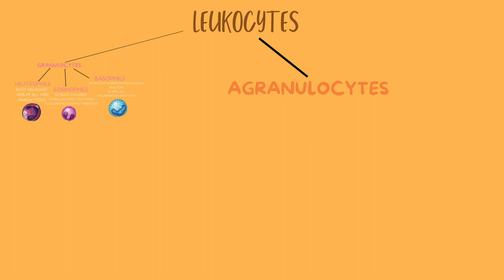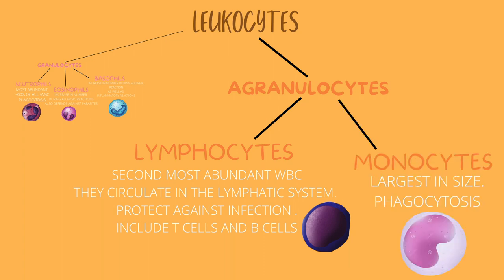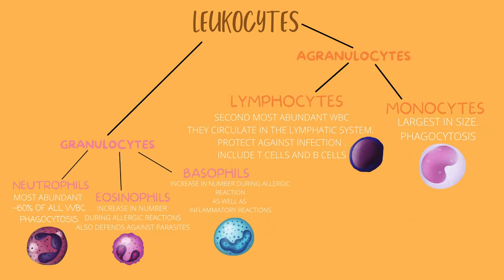Now looking at our agranulocytes: lymphocytes are the most abundant white blood cell. These differ from other white blood cells in that they develop and mature in the lymphoid tissue and they circulate in the lymphatic system. Monocytes are the largest of all the white blood cells. They also participate in the process of phagocytosis and have the ability to turn into macrophages. They are often found when chronic illness is present in the body. And there we have it — the white blood cells.